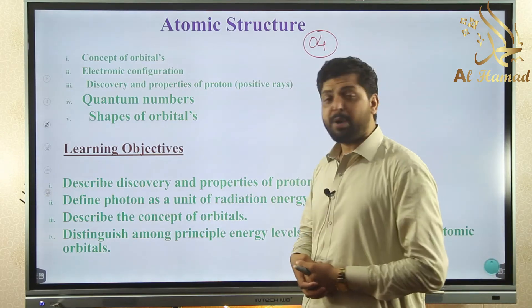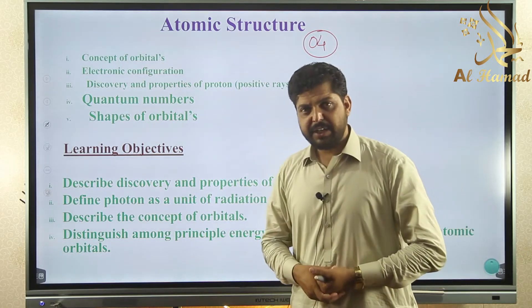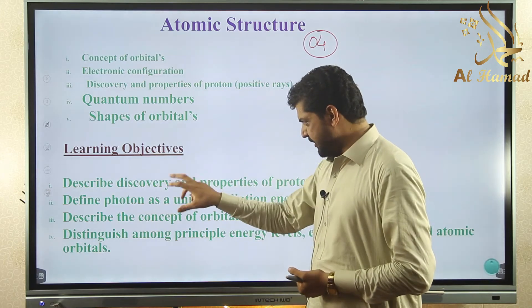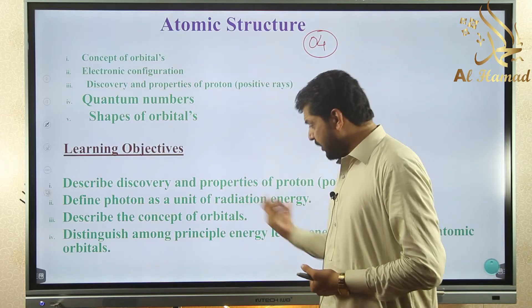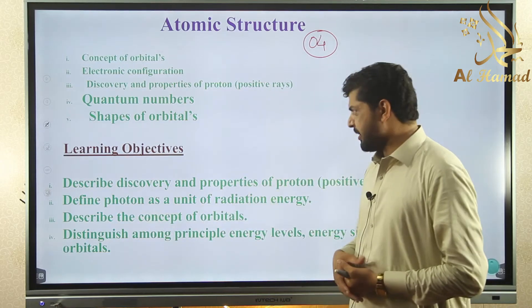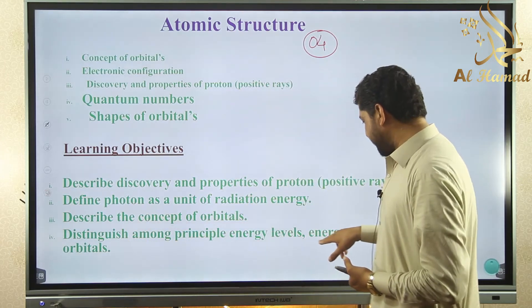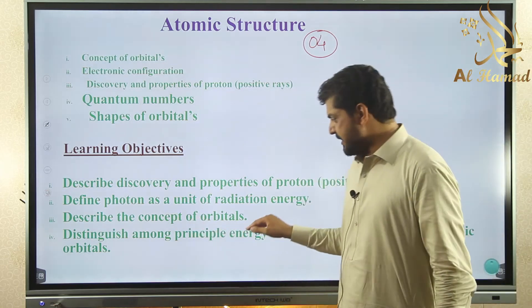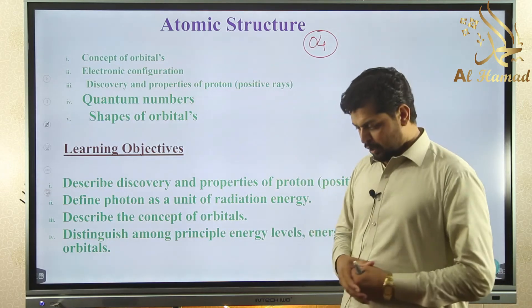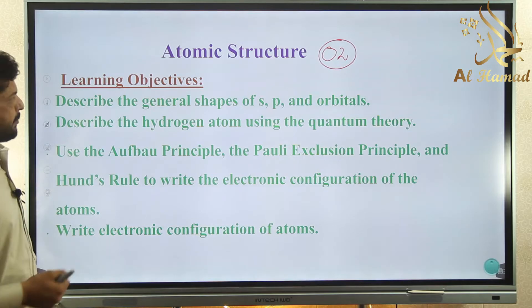Learning objectives for Atomic Structure: First, understand how protons were discovered and their properties. Second, define photon as a unit of radiation energy — understanding how the concept of photon came about and that it is a unit of radiation. Third, the concept of orbital — distinguish among principal energy levels, energy sub-levels, and atomic orbitals. This is a major objective in this chapter.